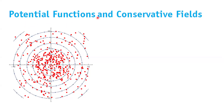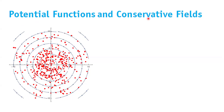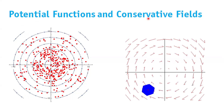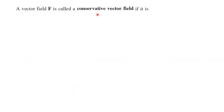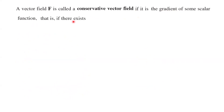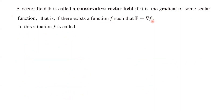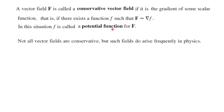We started talking about potential functions and conservative vector fields, and took a look at some visualizations in 2D. A vector field F is called a conservative vector field if it is the gradient of some scalar function — meaning there exists a scalar function f such that the vector field F equals the gradient of f. In that situation, f is called a potential function for the vector field F. Remember that not all vector fields are conservative vector fields.